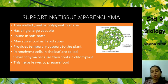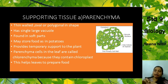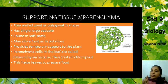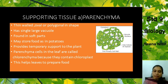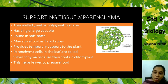Parenchyma cells in the leaves are called Chlorenchyma. If these Parenchyma cells are found in the leaves they have a different name — Chlorenchyma — because they contain chloroplast, the green pigment. So they are known as Chlorenchyma, and this helps the leaves to prepare the food. When Parenchyma is present with chloroplast in the leaf, they are known as Chlorenchyma.